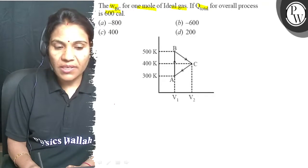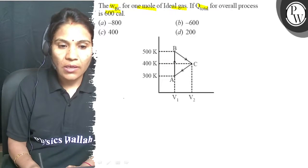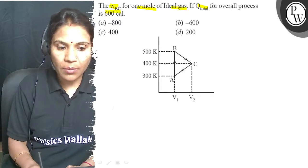Question me given, graph ke according, ABC a cyclic process hai. It is a cyclic process.